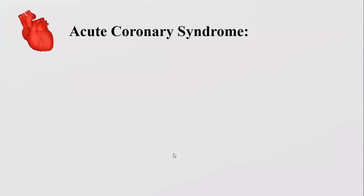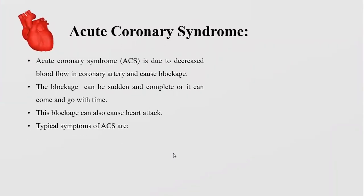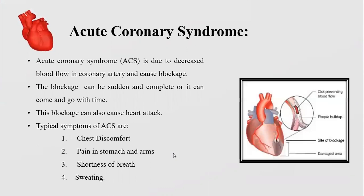What is Acute Coronary Syndrome? ACS is basically a broad term for situations where the blood supply to the heart is blocked, such that a particular part of the muscle is unable to function or it dies completely. It can also cause heart attacks. Typical symptoms of ACS are chest discomfort, pain in stomach and arms, shortness of breath, and sweating.